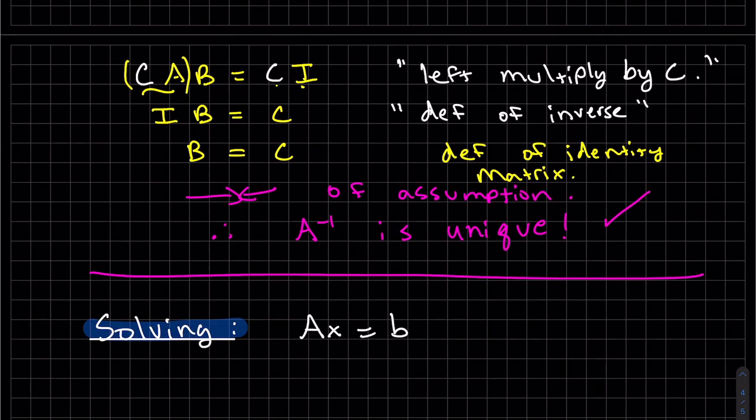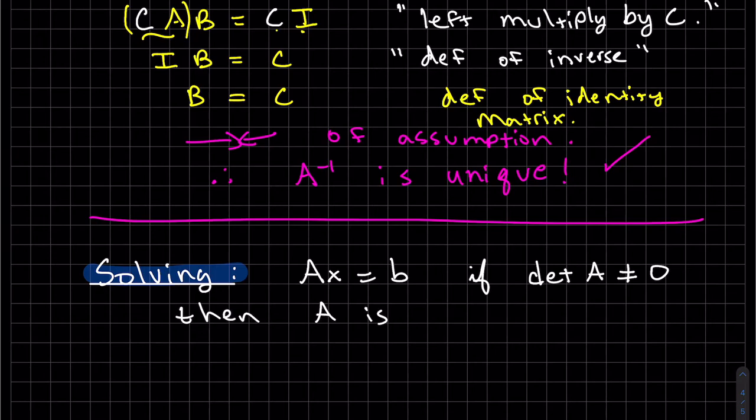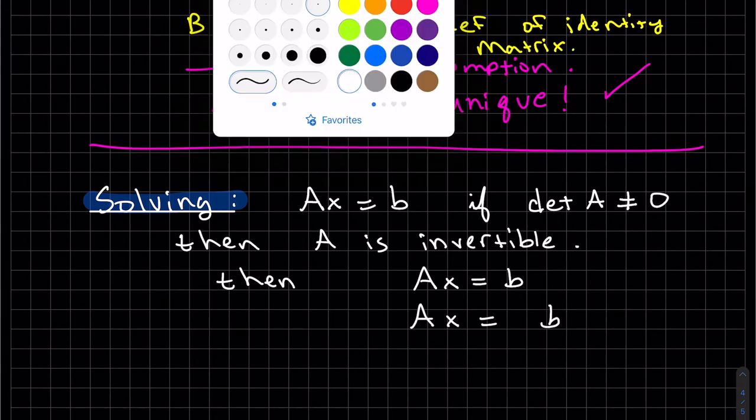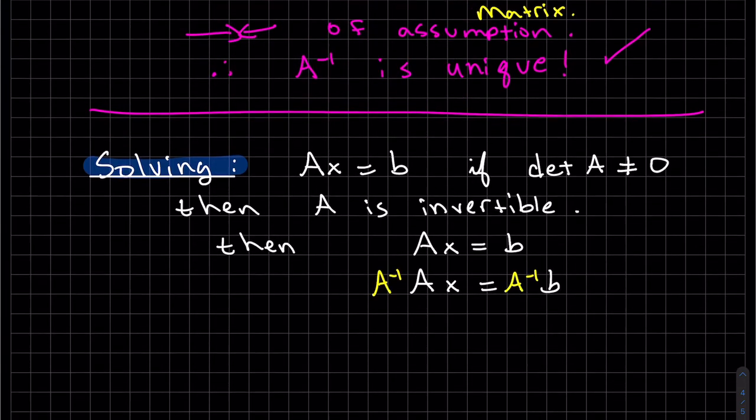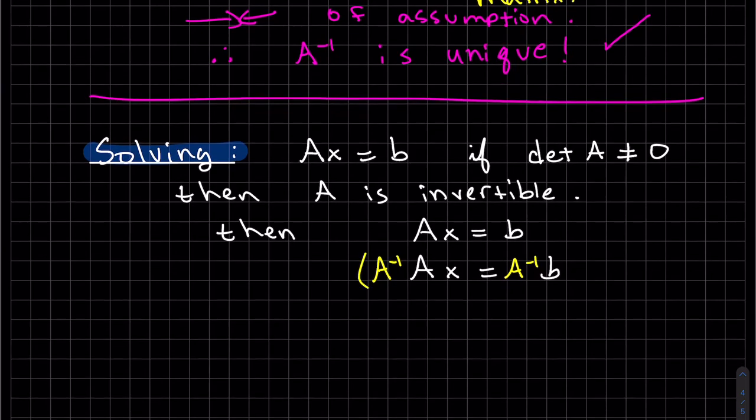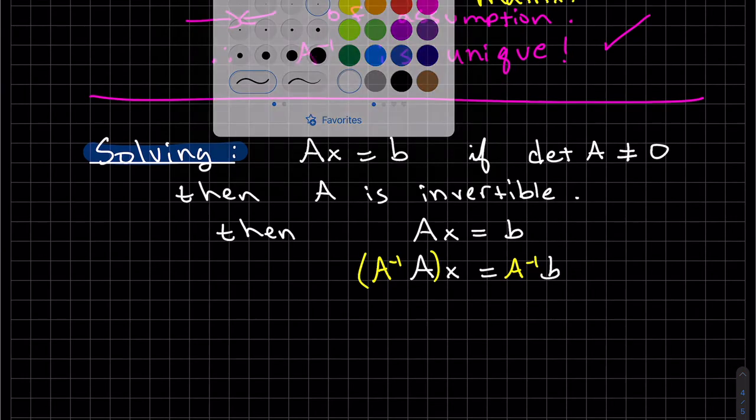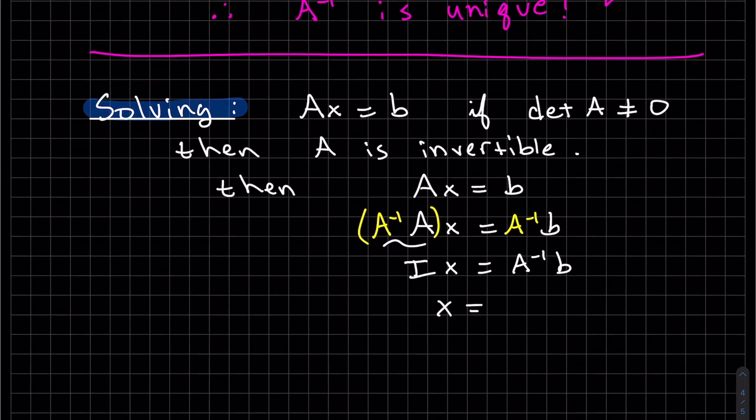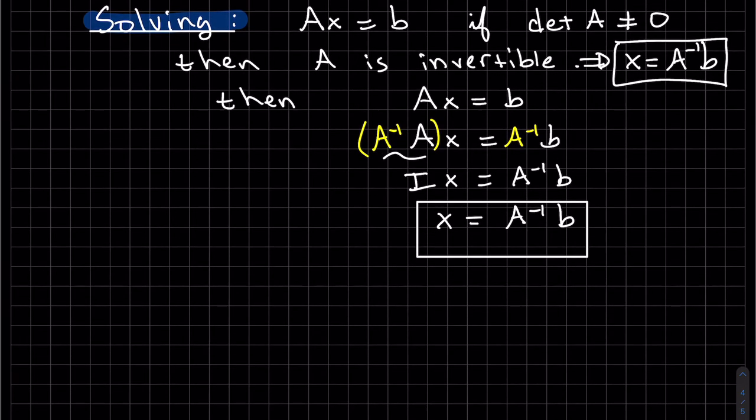So if we have a system of equations and that's Ax equals b, if the determinant of A does not equal zero, then we know A is invertible. So we can left multiply by A inverse. I'm like dividing by A, but you're not allowed to divide by matrices. So we left multiply by the inverse. And then this becomes I. And we've just solved for x. It's the matrix A inverse times b. I wouldn't memorize that. You just do the math and we get our solutions.